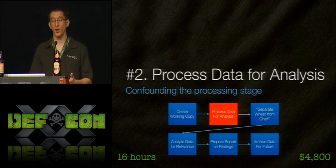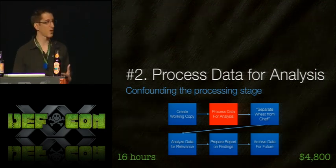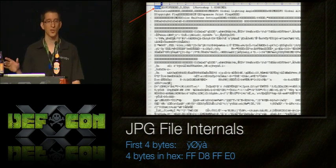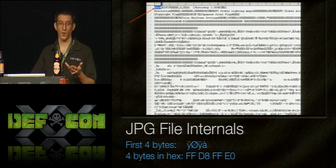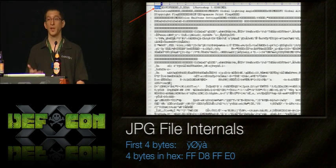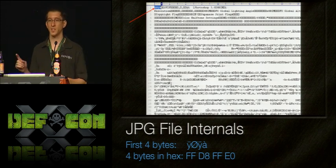The second stage of the workflow is processing data for analysis — taking hashes, doing file signature analysis to see if extensions match file formats. This shows the internals of a JPEG file; the first four bytes are FFD8 FFE0. These four bytes denote a JPEG file, and whenever a picture viewer tries to open a file, it checks these header bytes to confirm it's a JPEG. File signature analysis relies on these header bytes to identify whether a file is a JPEG, executable, ZIP, PDF, or any other format.